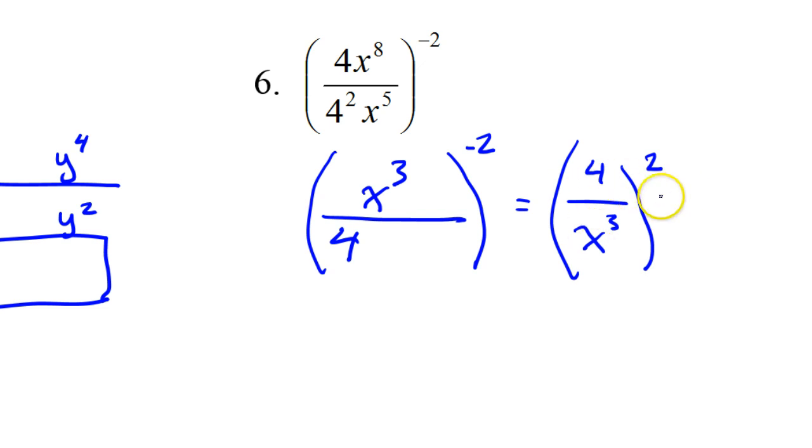In this case, the reciprocal, so I'm going to have 4 over x to the third power, and then that's going to be raised to the positive 2 power. I did the reciprocal and made it a positive. Now, I can go ahead and square these individual parts. So, 4 squared, of course, is 16. And when I do x to the third power squared, I need to multiply these. So, this will be x to the sixth power. This is, in fact, the answer to number 6.